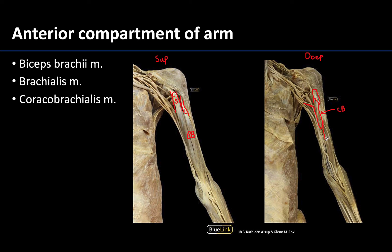The brachialis, which I'm outlining now, has a proximal attachment around mid-shaft of the humerus and has a very similar belly shape to the biceps brachii. The key point is that the brachialis is deep to the biceps brachii, so if you can see the coracobrachialis, generally that means you're deep, and the brachialis will be on that same plane.